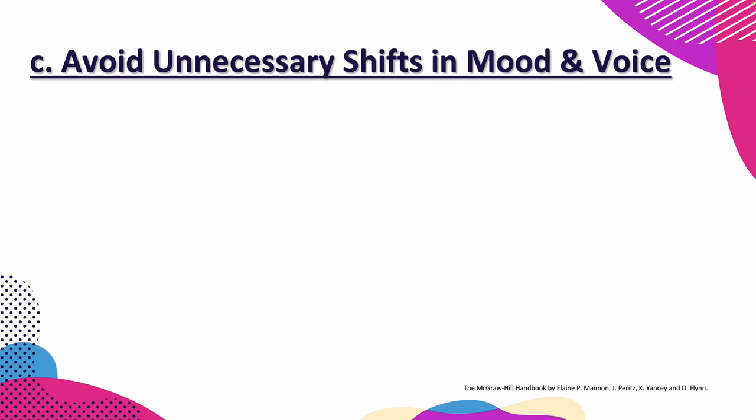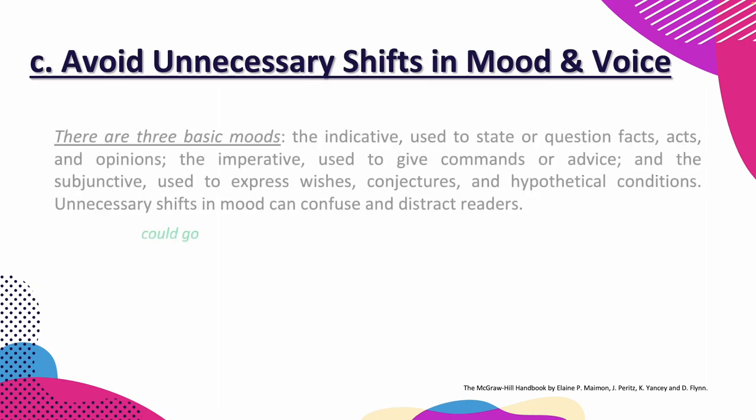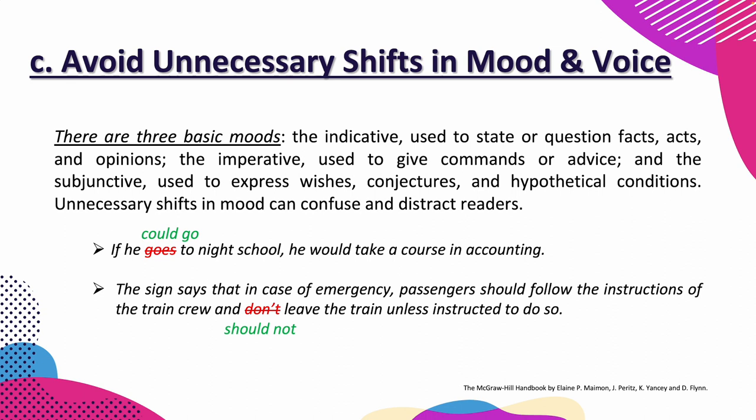Next point: avoid unnecessary shifts in mood and voice. There are three basic moods. The indicative, used to state facts, acts, and opinions. The imperative, used to give commands or advice. And the subjunctive, used to express wishes, conjectures, and hypothetical conditions. Unnecessary shifts in mood can confuse and distract readers. Like in this example: 'If he goes to night school, he would take a course in accounting.' We should use: 'If he could go to night school, he would take a course in accounting.'